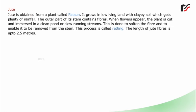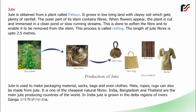Jute is obtained from a plant called patson. It grows in low-lying land with clay soil which gets plenty of rainfall. The outer part of its stem contains fibers. When flowers appear, the plant is cut and immersed in a clean pond or slow-running streams to soften the fiber and enable it to be removed from the stem. This process is called retting. The length of jute fibers is up to 2.5 meters. Jute is used to make packaging material, sacks, bags, and even clothes. Mats, ropes, and rugs can also be made from jute. It is one of the cheapest natural fibers. India, Bangladesh, and Thailand are the main jute-producing countries. In India, jute is grown in the delta regions of rivers Ganga and Brahmaputra.